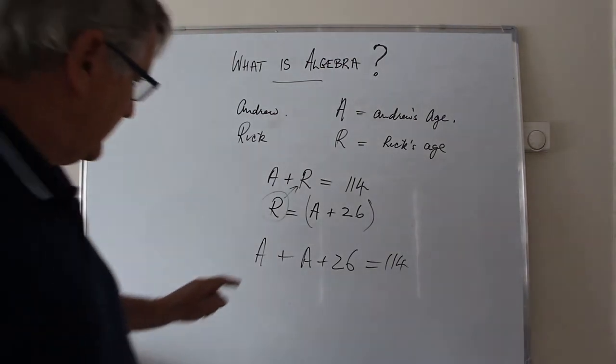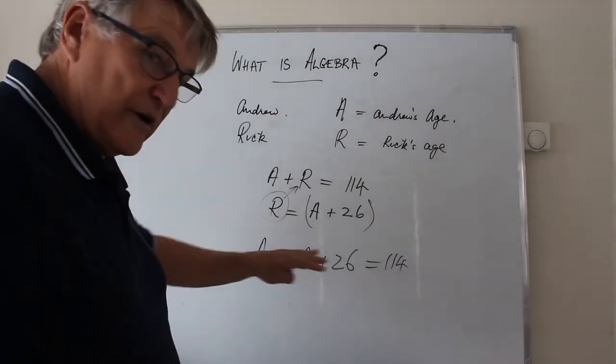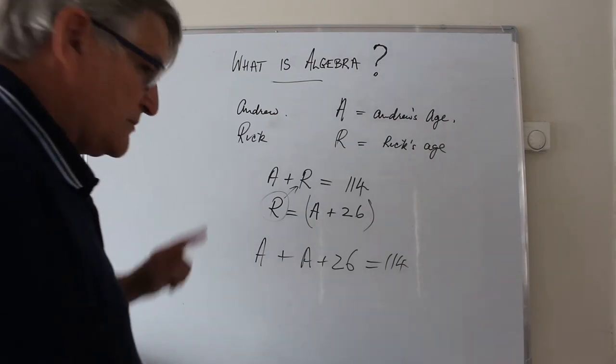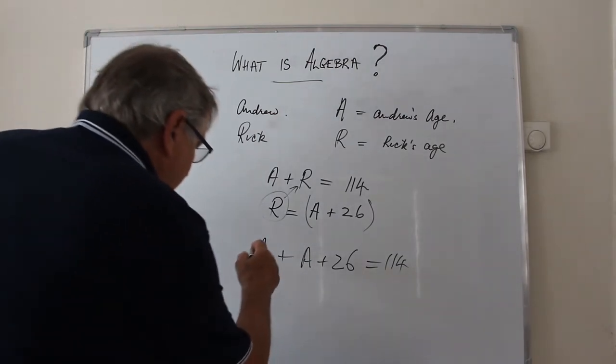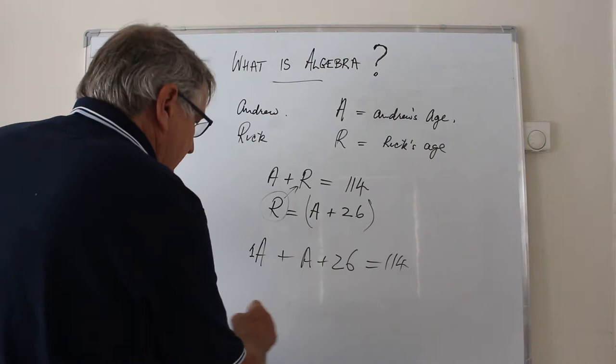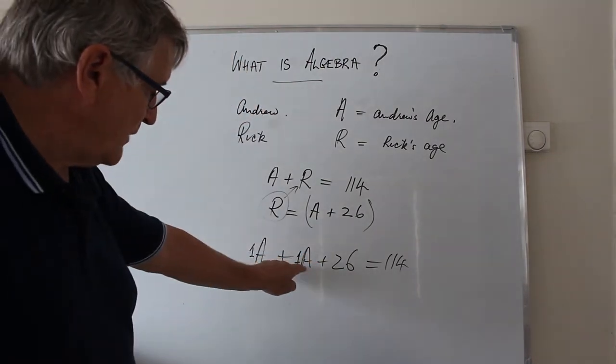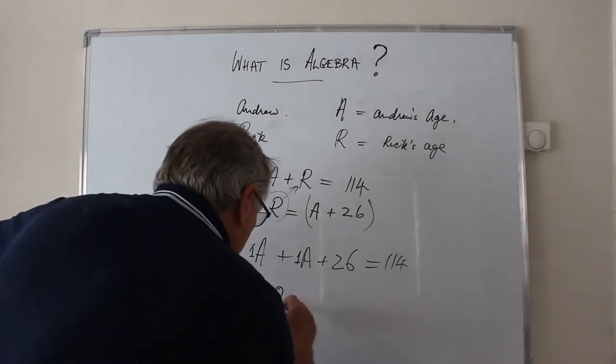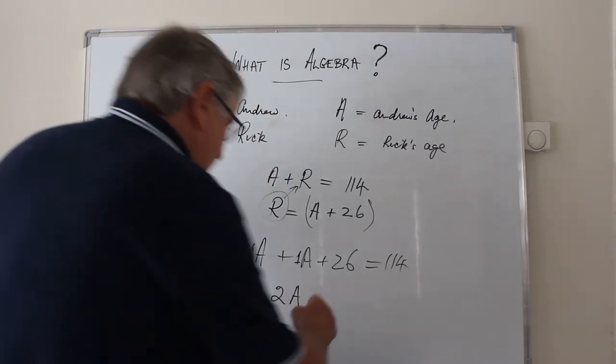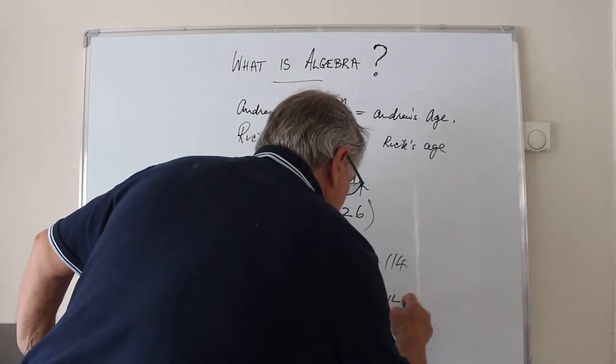Now, some rules of algebra. A and A, they're called like terms. We've got some hidden ones here. A means 1A and A means 1A. So when we add 1A to 1A, we get 2As. 2 times A plus 26 is equal to 114.